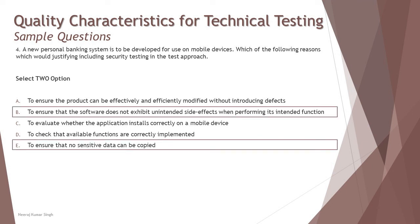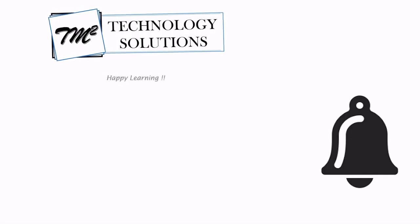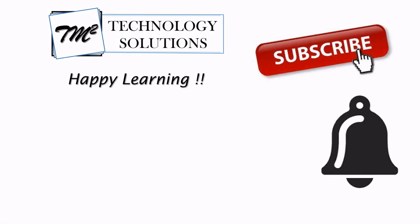The right answers are B — to ensure the software does not exhibit unintended side effects when performing its intended functions, which is a quality characteristic — and E — to ensure no sensitive data can be copied, which is a key security parameter that needs to be tested. That's all for this tutorial. Feel free to comment below with any questions. Till then, keep learning, keep exploring, and keep understanding the context. Thanks for watching — happy learning!